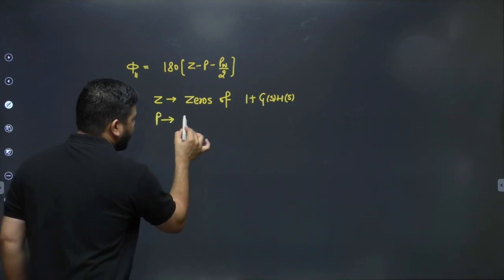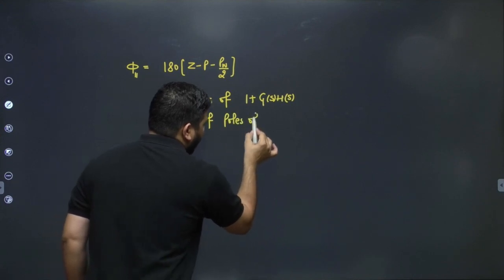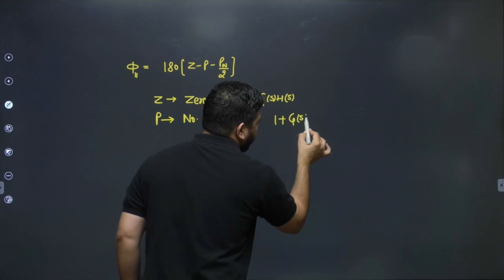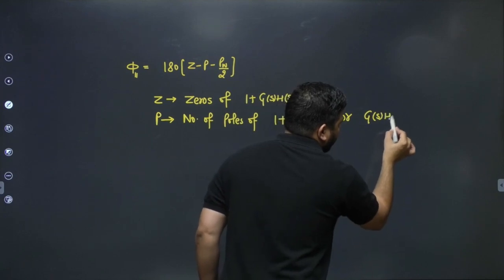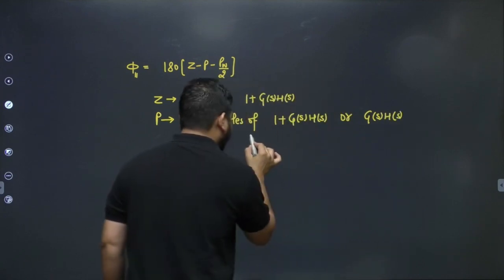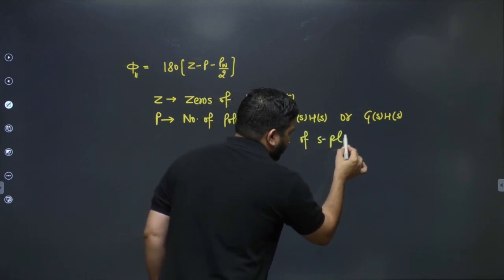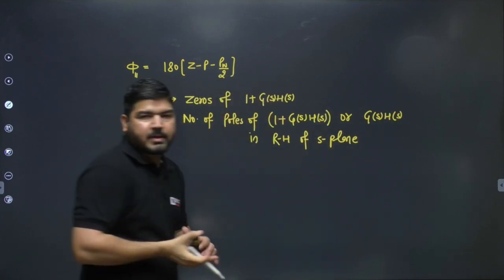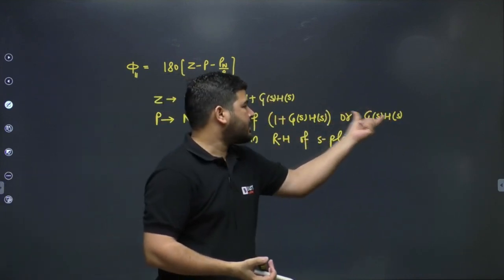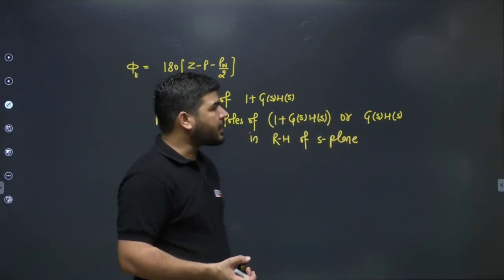P is the number of poles of (1 + G(s)H(s)) or G(s)H(s) lying in the right half of the s-plane. Since G(s)H(s) and (1 + G(s)H(s)) share the same poles, P represents poles of either expression in the right half of the s-plane.